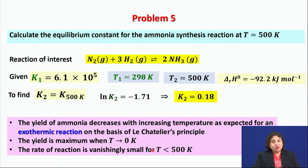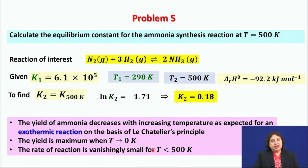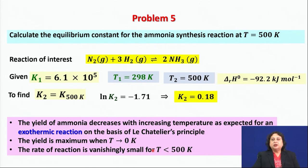Creating a 500 Kelvin atmosphere requires burning coal, for example. When assessing the commercial viability of harvesting ammonia from this reaction, one must account for the cost of heating the nitrogen and hydrogen mixture to 500 Kelvin and maintaining it for over an hour. This makes the reaction without additional measures not commercially viable.